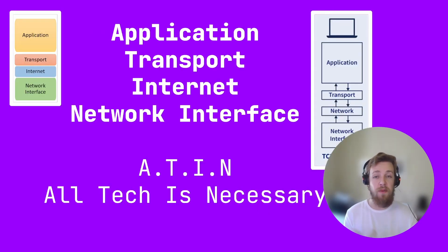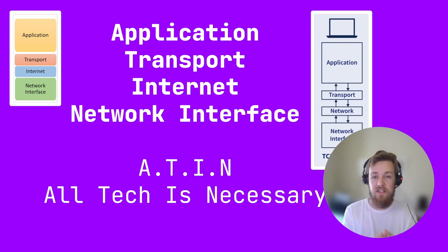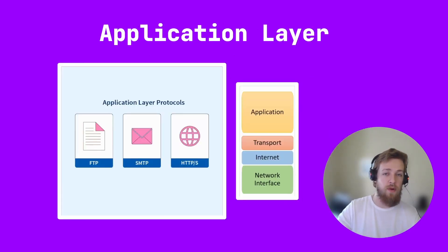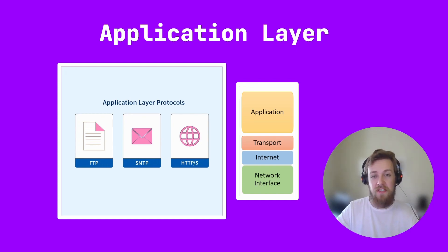A good way to remember this is through the phrase 'all tech is necessary' — so that's again from top to bottom: application, transport, internet, network interface. Getting into the layers: application sits at the top of the model, and this is the layer where web browsers and email clients access the network services. This is where protocols like HTTP, SMTP, and FTP sit.